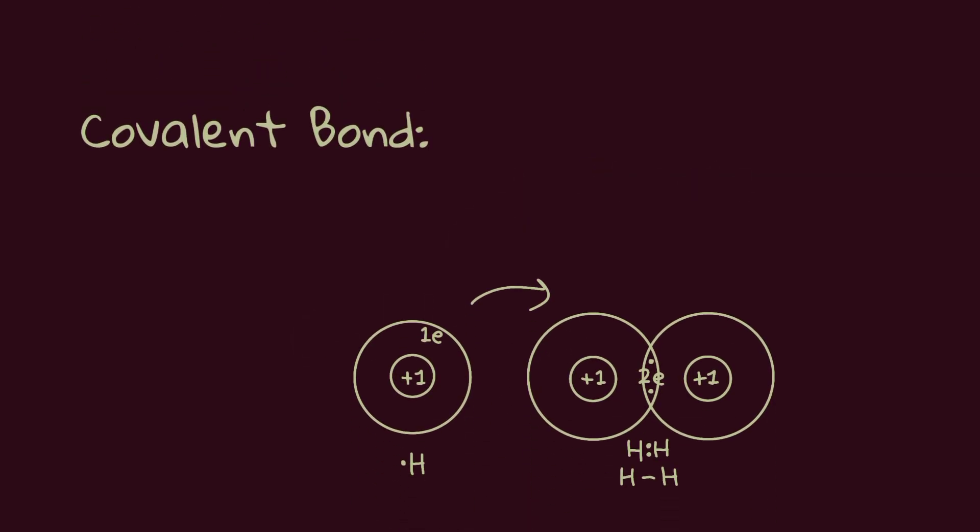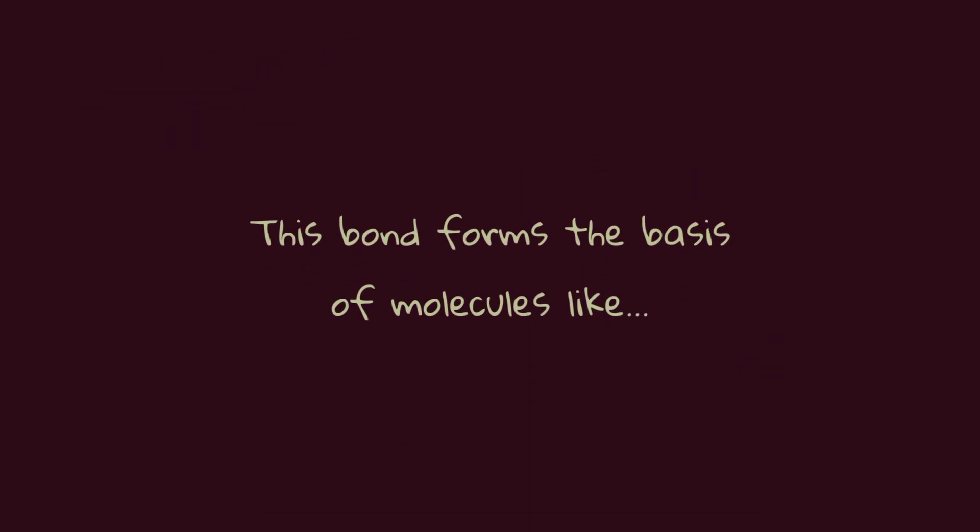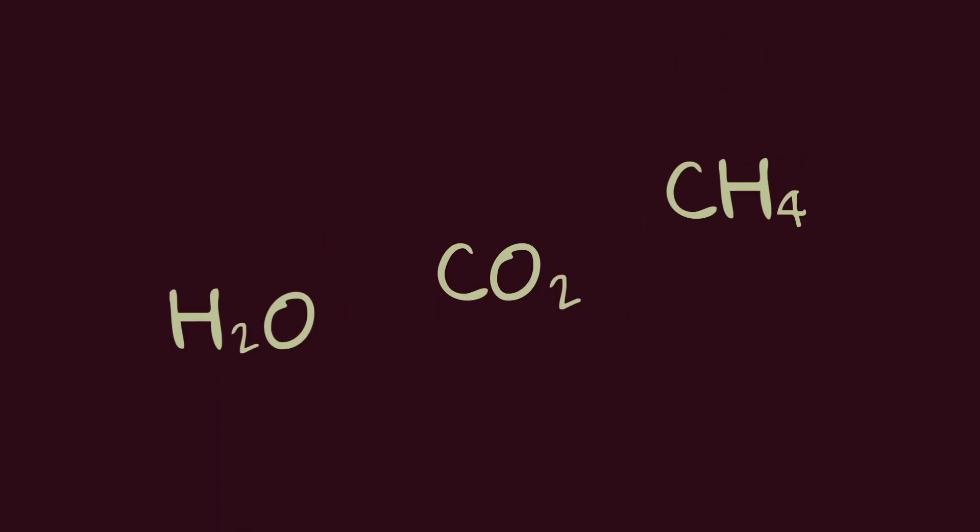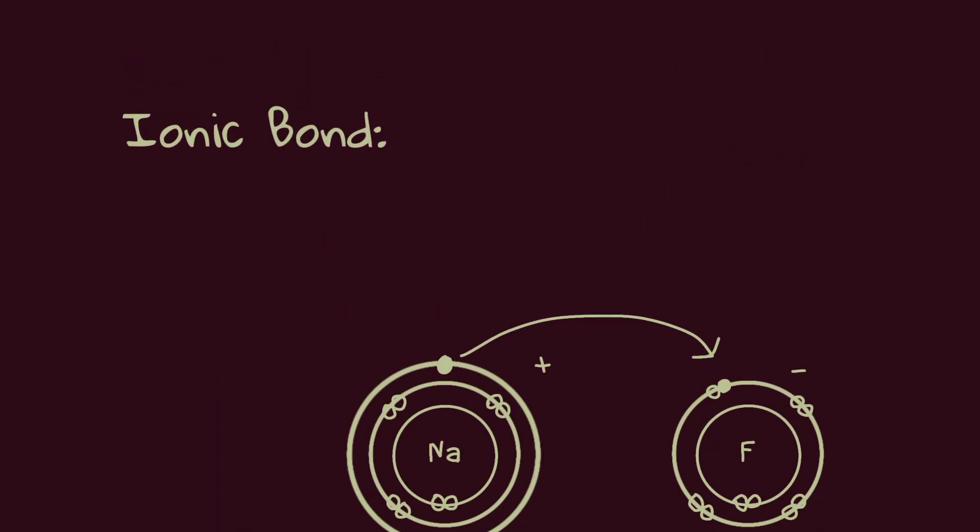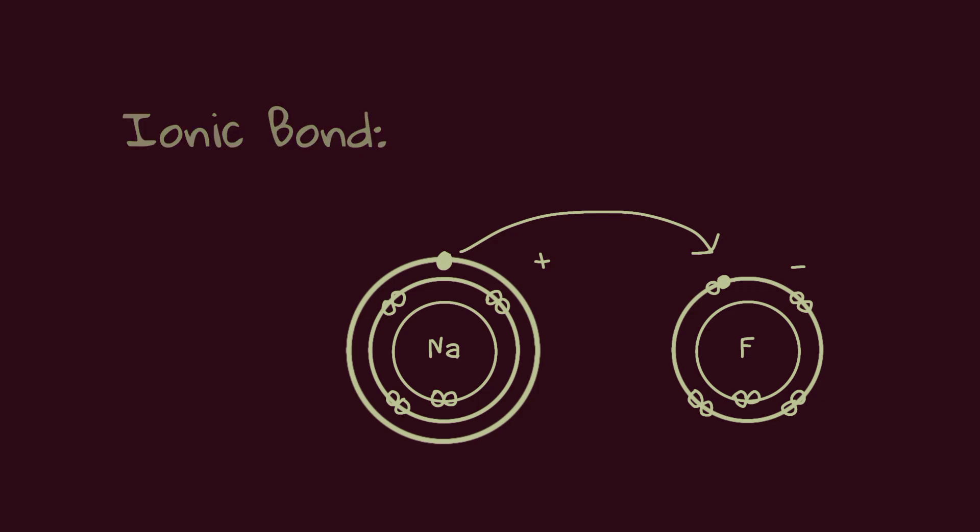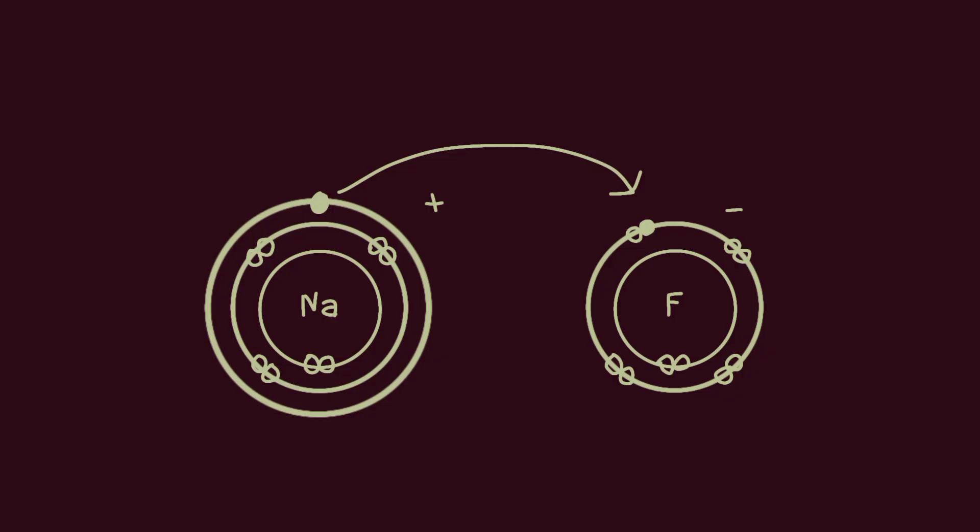Covalent bond: Two atoms come together by sharing their electrons. This bond forms the basis of molecules like water, methane, and carbon dioxide. Ionic bond: One atom gives an electron to another. This bond is seen in compounds like table salt. One atom becomes a positively charged ion (cation), while the other becomes a negatively charged ion (anion).